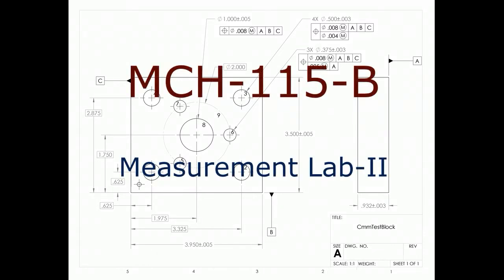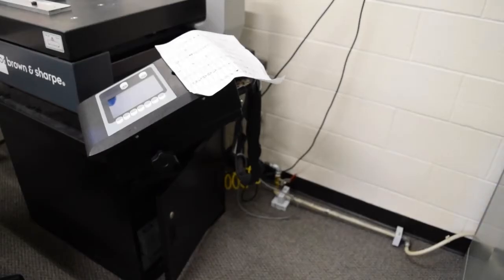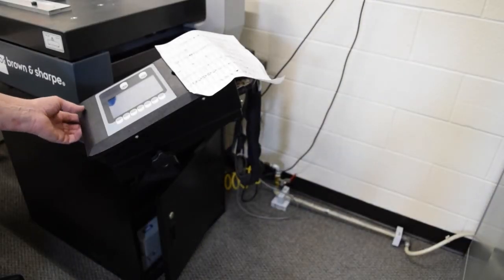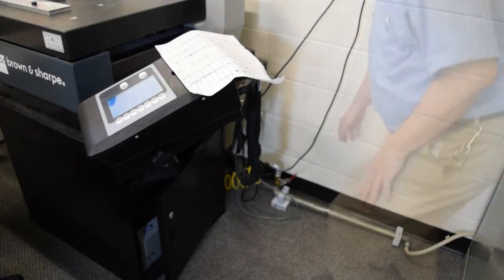Welcome to the lab for MCH-115B. Today we're going to be using the CMM machine to measure a part. Start by turning the machine on. The switch is located on the front edge of the console.